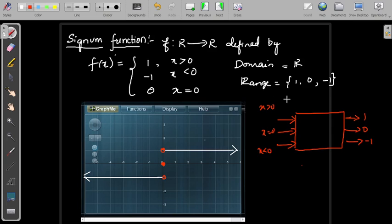x greater than 0 means if you give any value like 1, 2, 1.1, 5, 100, 1000—any positive value—its output is always 1.